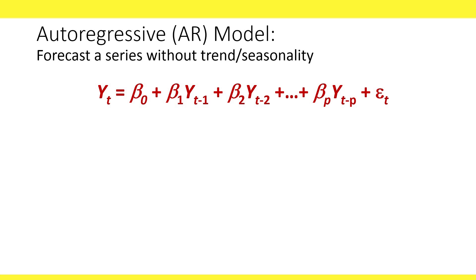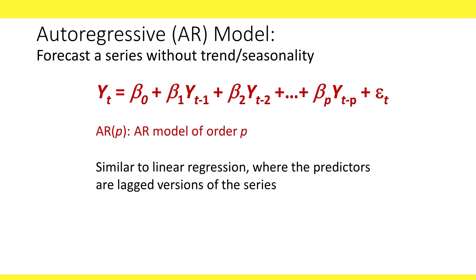An autoregressive model can be used to forecast a series with no trend and no seasonality. The model looks like this. You can see it's similar to a regression model, with predictors that are lagged versions of the series. In this formula, we use lags 1 to p, and therefore we call this an AR model of order p, or simply an AR(p) model.